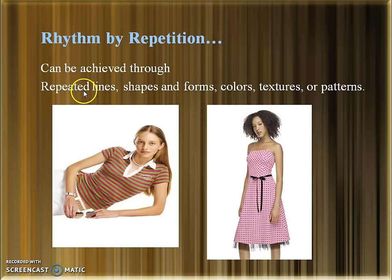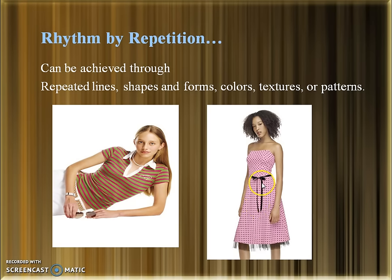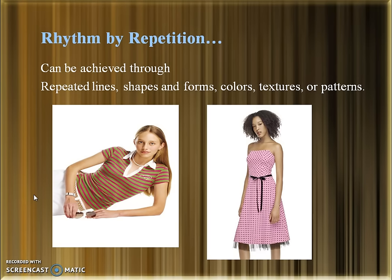Rhythm by repetition can be created using repeated lines, shapes, forms, colors, textures or patterns. When we repeat one element several times, it creates a sense of rhythm. In this example, we can see a repeated use of black colored polka dots. In another example, we can see a repeated use of lines, creating rhythm by repetition.